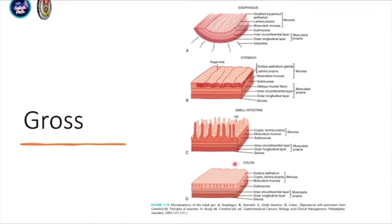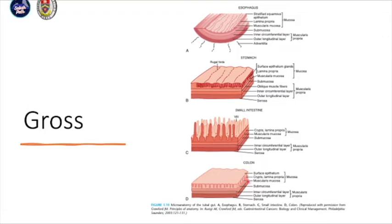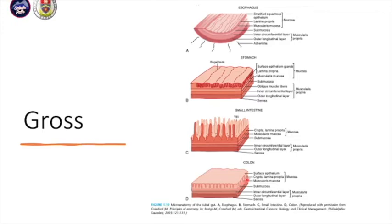Going distally, you have the colon. In the colon, you have the mucosa, submucosa, muscularis propria, and the outermost layer is serosa. The surface epithelium is different and the architecture of the crypts is different. Hence, in the colon you do not have the villi architecture.